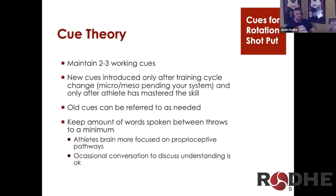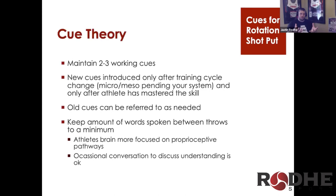In cue theory, we want to focus on two to three working cues in a session. We consider training blocks and cycles one at a time, and only introduce new cues at the beginning of a new training block. Athletes have a program for two, four, or six weeks depending on the complex, and the whole program is the unit of measure — we measure growth from the full training block, not just a given day.